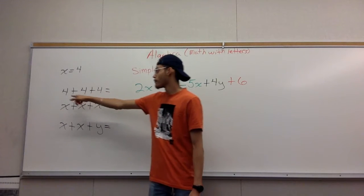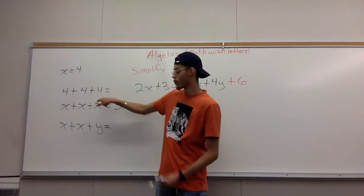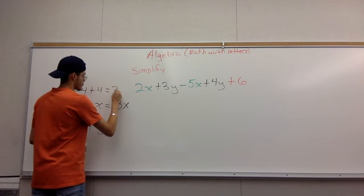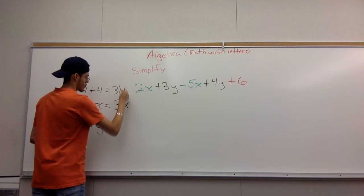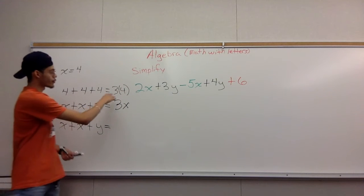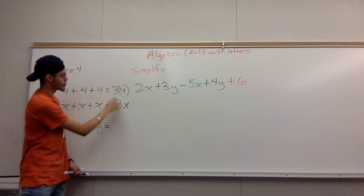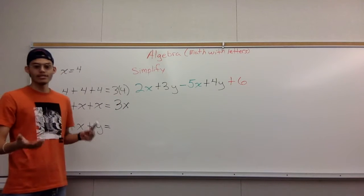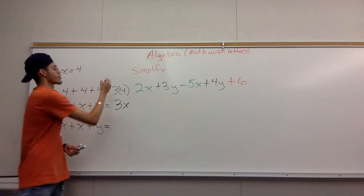That is basically what is happening right here: 4 plus 4 plus 4. You have 3 times 4, 3x, 3 times 4. What is 3 times 4? It's just 12.